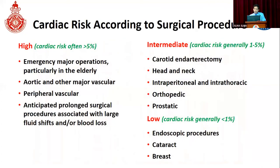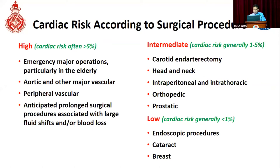According to the type of surgery, we can also assess the risk of cardiac events. High-risk surgeries with cardiac risk more than 5% include emergency major operations particularly in elderly, aortic and other vascular surgeries, peripheral vascular surgeries, and prolonged procedures with large fluid shifts or blood loss. Intermediate-risk surgeries with 1 to 5% cardiac risk include carotid endarterectomies, head and neck surgeries, intraperitoneal and intrathoracic surgeries, and orthopedic and prosthetic surgeries. Lower-risk surgeries include endoscopic procedures, cataract and breast surgeries, and other superficial surgeries.